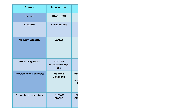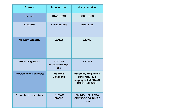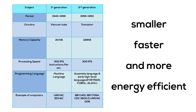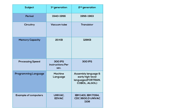In the second generation, transistors were used. The transistor was far superior to the vacuum tube, allowing computers to become smaller, faster, more energy efficient, and more reliable. In the second generation, the use of assembly language and early high-level languages became popular.